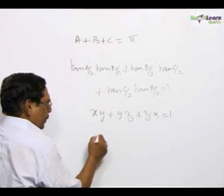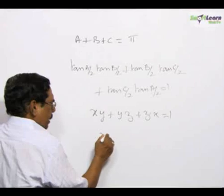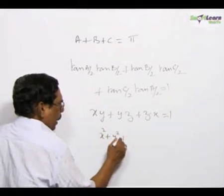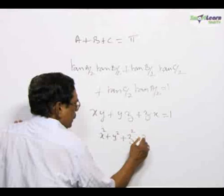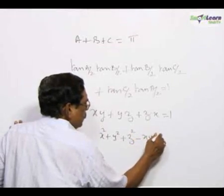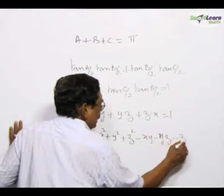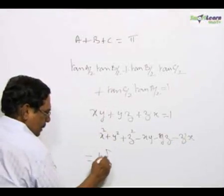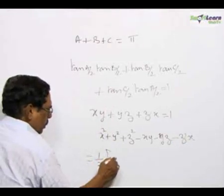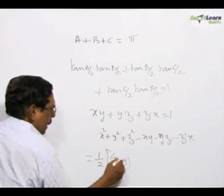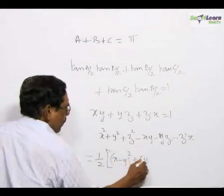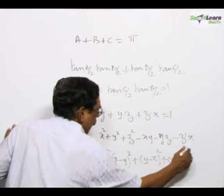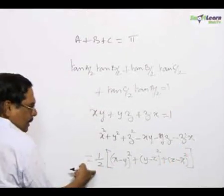Now, we know that x squared plus y squared plus z squared minus xy minus yz minus zx is nothing but, I used this in the last problem also, x minus y the whole squared plus y minus z the whole squared plus z minus x the whole squared. This is the result.